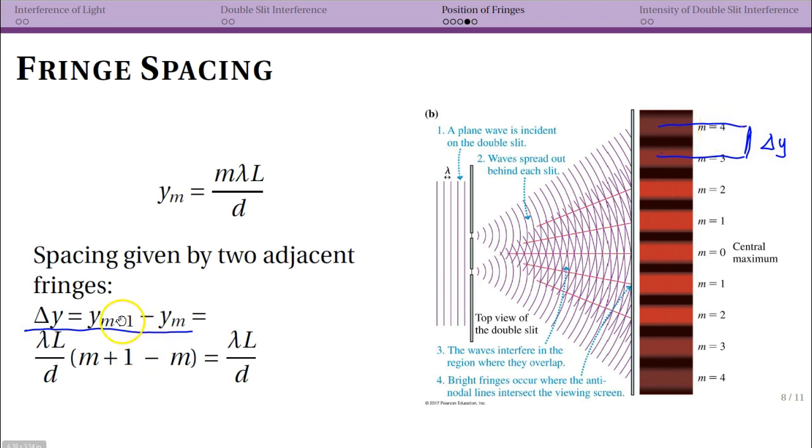By keeping that general and just keeping it as m plus 1 and m, when we plug those values in here, we see that this first part out front is shared—lambda L over d is shared. Then we have m plus 1 minus m, so that means that our m's cancel. We get lambda L over d for our fringe spacing, regardless of what fringe you're at. That means that these are evenly spaced; the distance between them is equal.